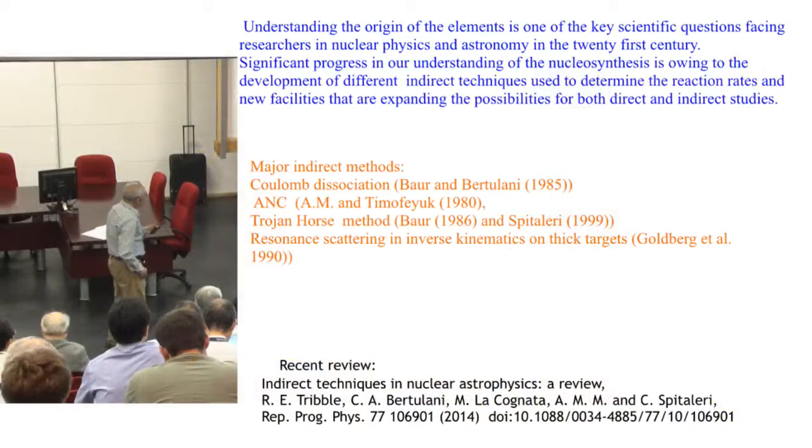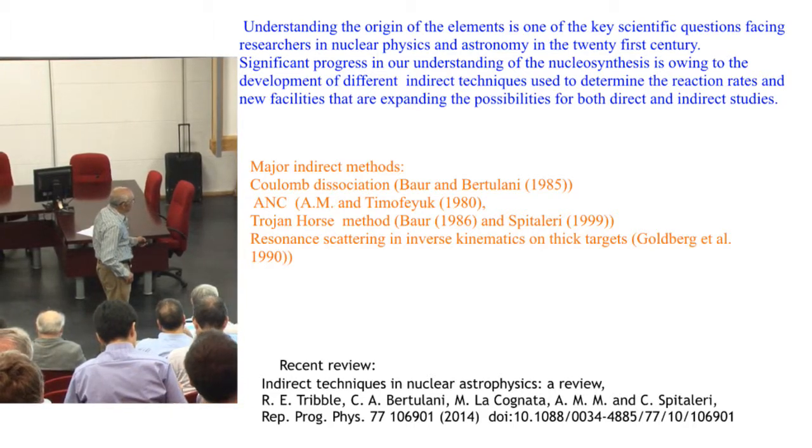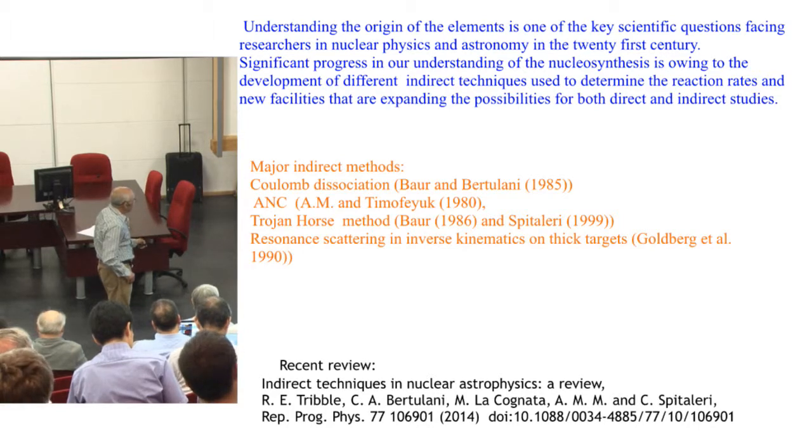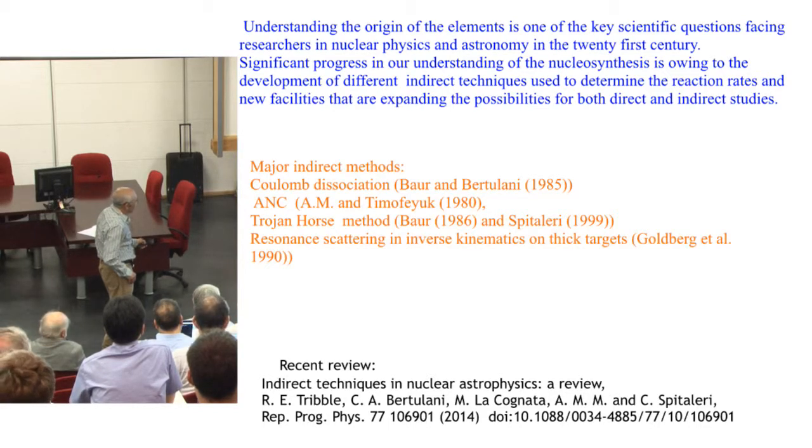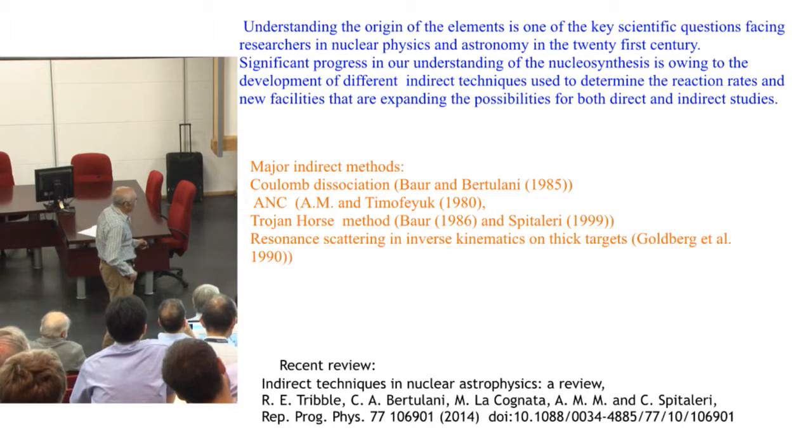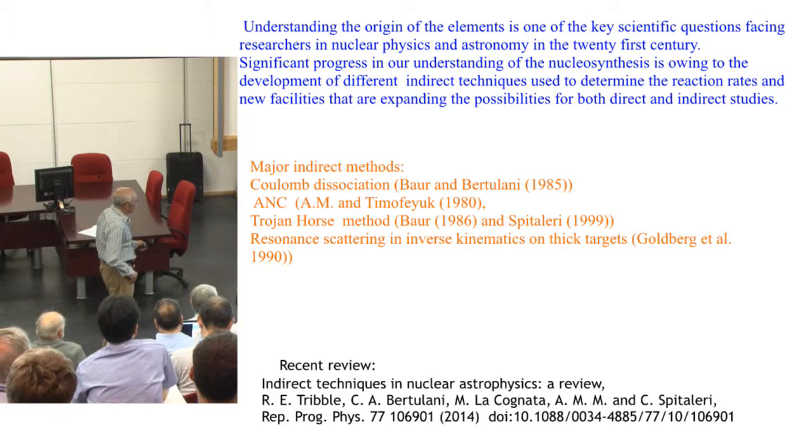Understanding the origin of the elements is one of the key scientific questions facing researchers in nuclear physics and astronomy in the 21st century. Significant progress in our understanding of nucleosynthesis is owing to the development of different indirect techniques used to determine reaction rates, and new facilities that are expanding possibilities for both direct and indirect studies. The major indirect methods are Coulomb dissociation invented by Bauer and Bertulani in 1985, ANC method suggested by me and Timofeyuk in 1990, and Trojan horse method suggested by Bauer in 1986 and modified by Claudio Spitaleri in 1999. Resonance scattering in inverse kinematics on thick targets was suggested by Goldberg and colleagues in 1990.